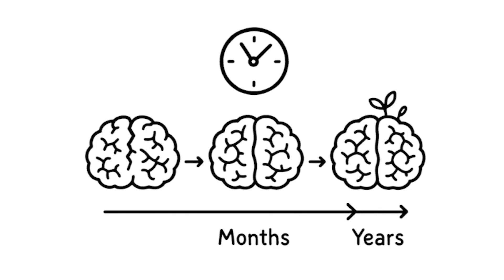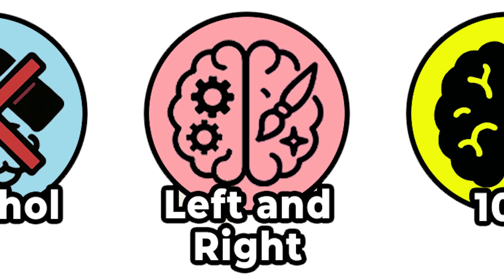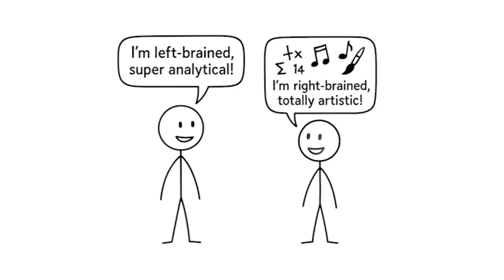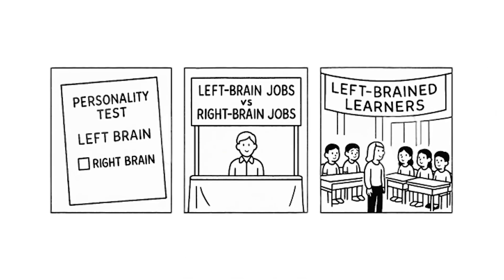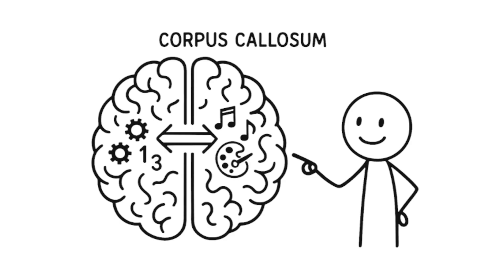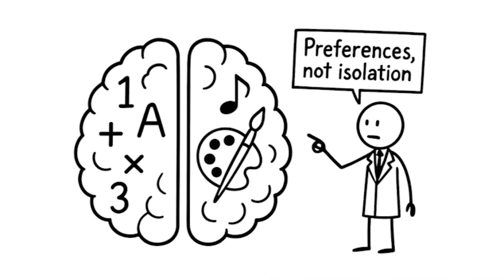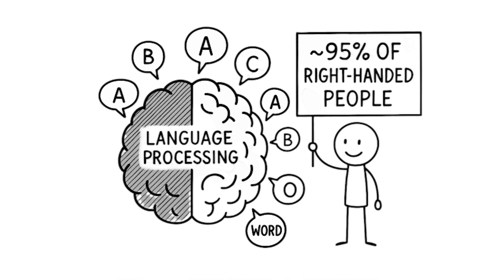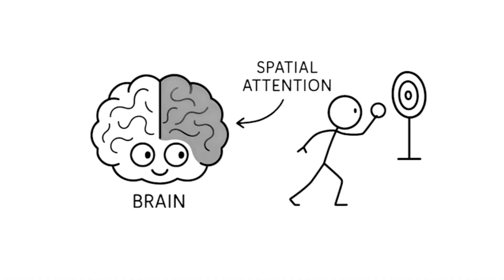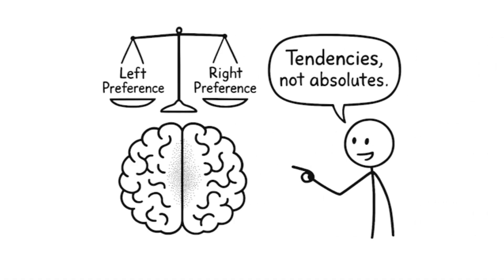Left brain is logical, right brain is creative. You've heard people say they're left-brained because they're analytical, or right-brained because they're artistic. This idea is everywhere. Personality tests, career advice, even school programs designed around it. But it's pseudoscience. Both hemispheres of your brain work together constantly through the corpus callosum, a bridge of 200 million nerve fibers that allows instant communication between sides. While some functions do show hemispheric preferences, language processing tends to be left-lateralized in about 95% of right-handed people, while spatial attention often shows right hemisphere dominance. These are subtle statistical tendencies, not absolute divisions.